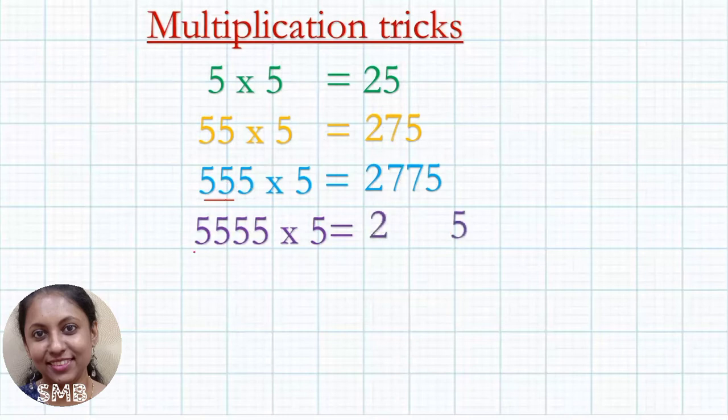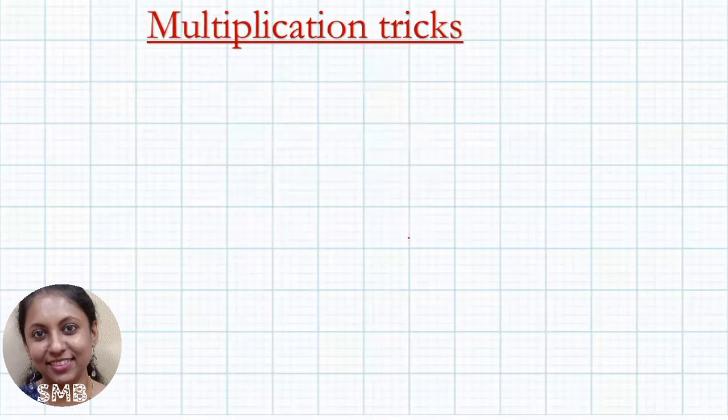Hope it is clear. Next, multiplication of 6. 6 into 6 is 36. Then what is 66 into 6? First number 3, last is 6, then in the middle 3 plus 6, 9 you can write.